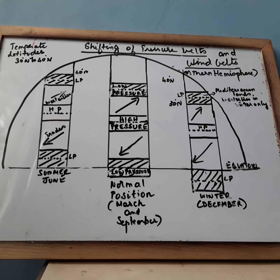In the same manner, when the sun is overhead at the Tropic of Capricorn in December, all the belts swing 5 degree to 10 degree south of their average position. The Mediterranean parts of Europe and California then come under the influence of the westerlies and receive rain in December, that is winter in Northern Hemisphere.